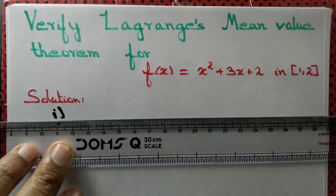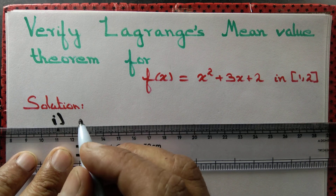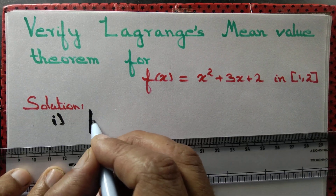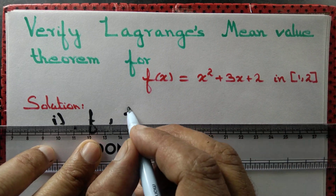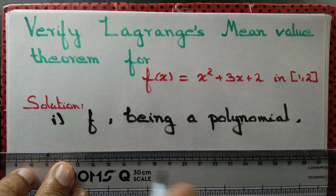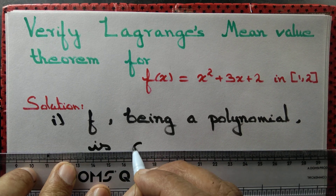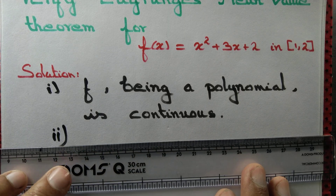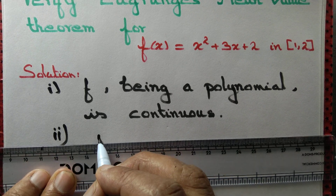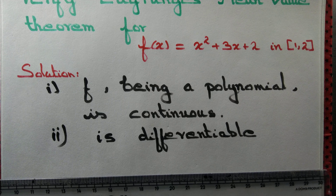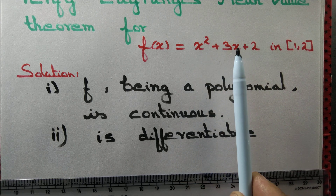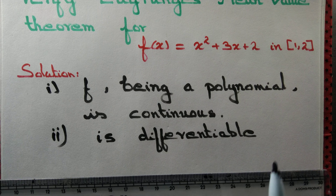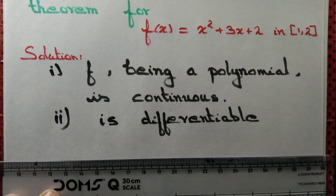First step, we need to show that the function is continuous. f being a polynomial function is continuous. Again, f being a polynomial is differentiable. We can even compute the derivative: the derivative of x² is 2x, the derivative of 3x is 3, and the derivative of 2 is 0. So the derivative f'(x) equals 2x + 3. Therefore, Lagrange mean value theorem is applicable.